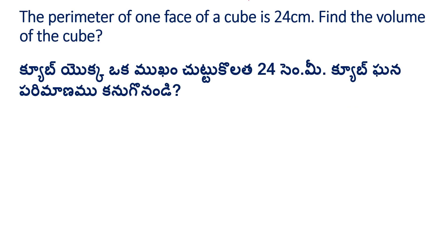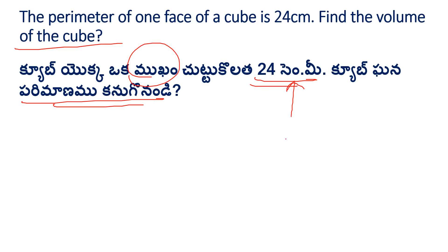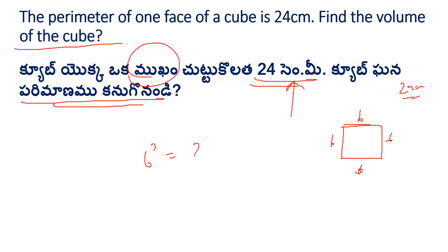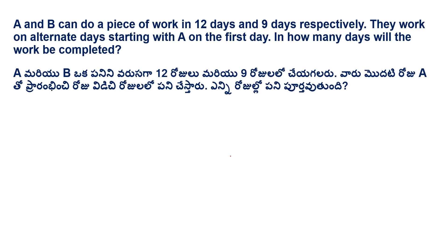The perimeter of one face of a cube is 24 centimetres. Find the volume of the cube. Each face is a square shape, and the perimeter is 24 cm. So each side is 6 centimetres. Volume of a cube is side cubed: 6 cubed equals 216. So the volume is 216 cubic centimetres.